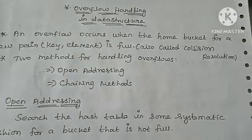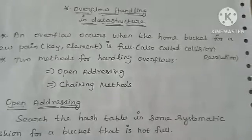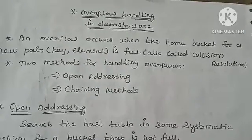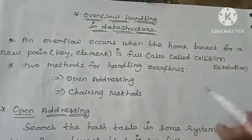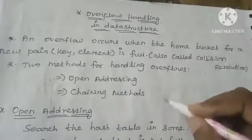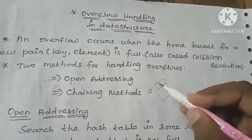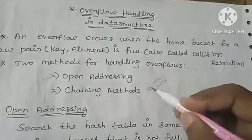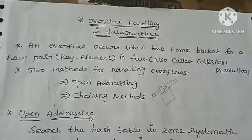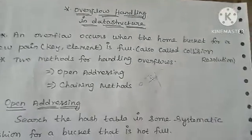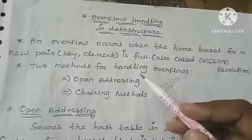Today we will discuss overflow handling in data structures. Overflow occurs in a hash table when more than one value is placed at the same position. For example, if position 0 is already occupied by one value and another value is assigned to the same position, that is overflow. Overflow is also called collision resolution.